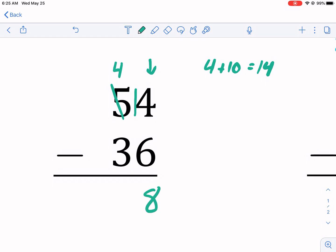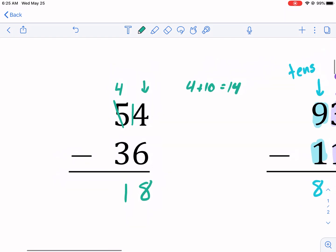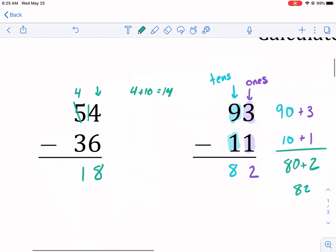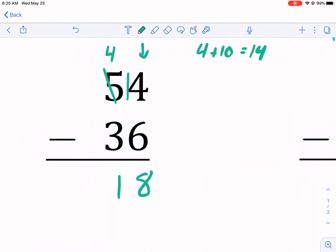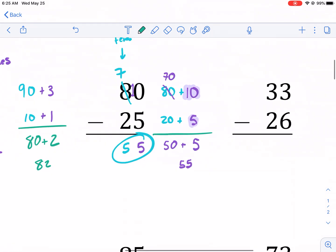And then I can do 4 minus 3, and that is 1. So I get 18 instead of some other complicated process. It's 54 minus 36. I get 18 for my answer.